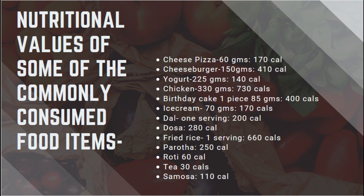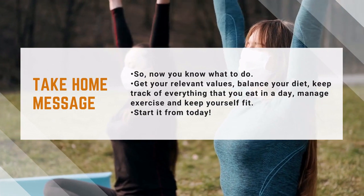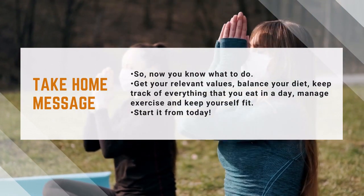Now let's look at the calorie values of certain food items. 60 grams of cheese pizza gives you 170 calories. A cheeseburger has 410 calories. Yogurt gives you 140 calories. 330 grams of chicken gives you 730 calories. A piece of birthday cake of 85 grams gives you 400 calories. 70 grams of ice cream gives you 170 calories. One serving of dal gives you 200 calories. A dosa gives you 280 calories. One serving of fried rice gives you 660 calories. One paratha has 250 calories, one roti 60 calories, a cup of tea 30 calories, and one samosa 110 calories.